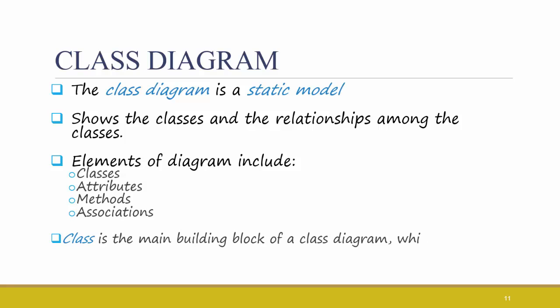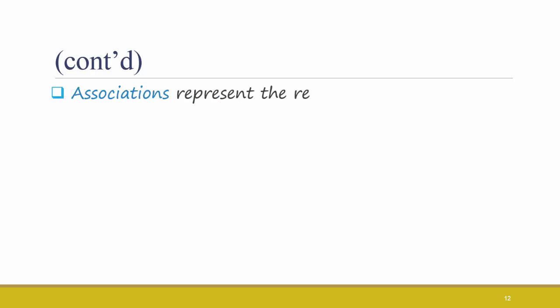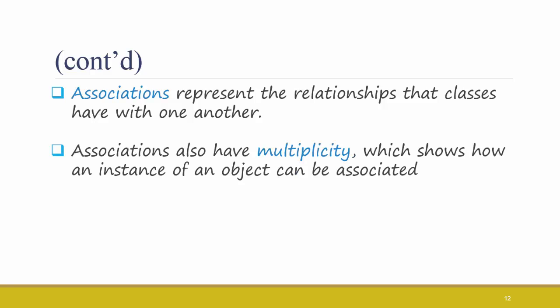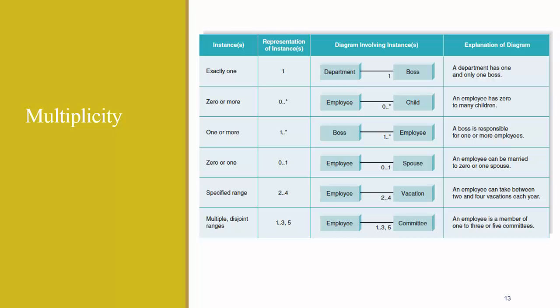A class is the main building block of a class diagram, which stores and manages information in the system. Associations represent the relationships that classes have with one another. Associations also have multiplicity, which shows how an instance of an object can be associated with other instances. The multiplicity in class diagrams is like the cardinality that we've discussed in ER diagrams. Many times in class diagrams, it's more specific than 0, 1, or many. For example, you can see here a specified range. You can have a minimum of 2 and a maximum of 4. Or you could even have disjoint ranges, like from 1 to 3 or 5.